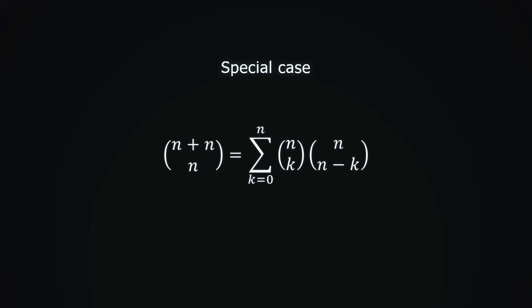On the left hand side, we have 2n choose n. On the right, we have a sum over k of terms n choose k times n choose n minus k. Using the identity we proved at the beginning of the video, we can replace n choose n minus k with n choose k. And we turn the product into a square.